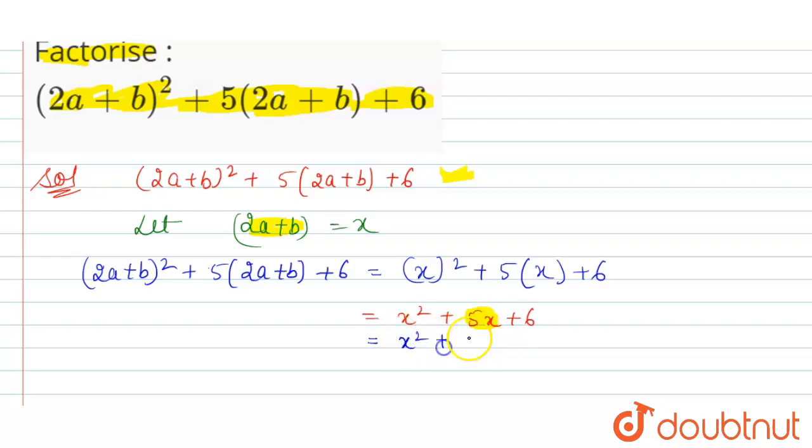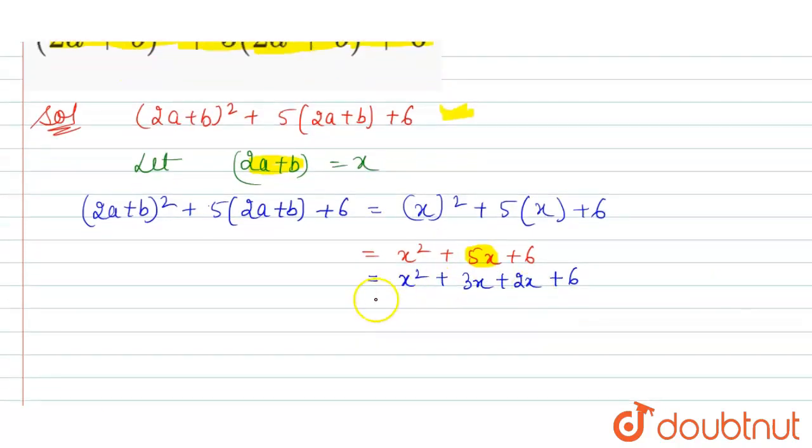Now solve this. Take x common, then it is x(x + 3). From this we can take 2 common, then it is 2(x + 3). We can write it as (x + 2)(x + 3).